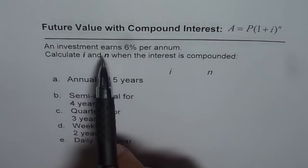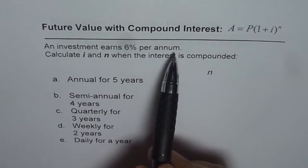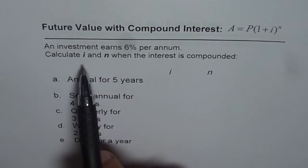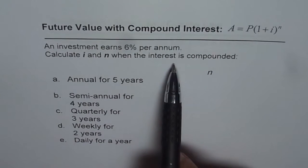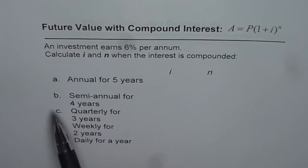Question is, an investment earns 6% per annum. Calculate i and n when the interest is compounded, and these are the different options given to us. So we will explore each one of that and then I think it will be absolutely clear to you how to use this formula.